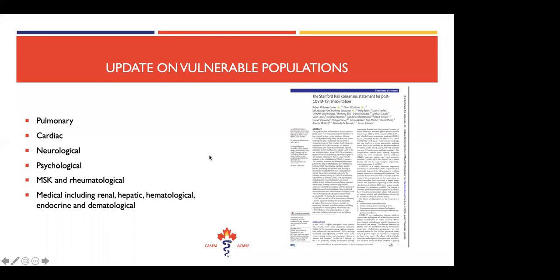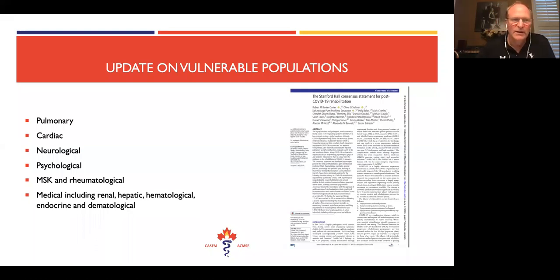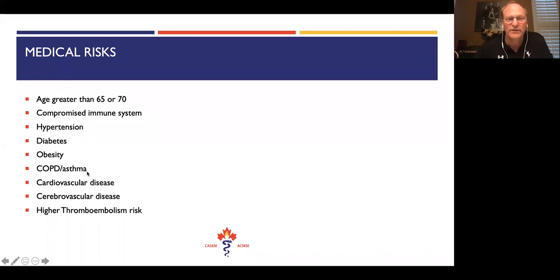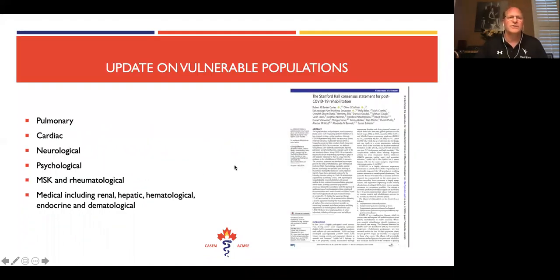MSK and rheumatological complications have occurred from COVID. For para athletes, there's a natural assumption that they are a vulnerable population, but there is no great evidence that — unless you have one of the listed medical illnesses — para athletes are at higher risk. There are lots of able-bodied athletes with significant asthma or cardiovascular disease who are at higher risk. Just because you're a para athlete doesn't mean you're at higher risk. That's important especially as we look at return to sport and returning people to competition and training venues.